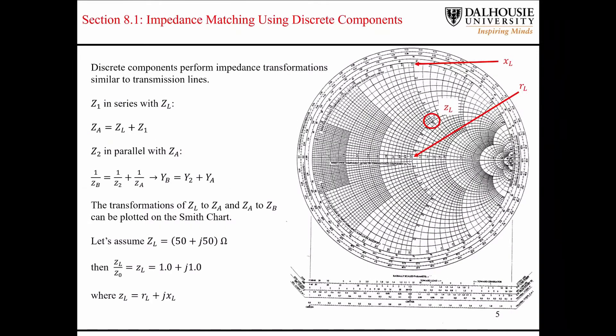So let's say we have the point corresponding to 50 plus J50 ohms. So like I said, the first thing you do is normalize the impedance with respect to the characteristic impedance of the system. You get the normalized form of the impedance here.